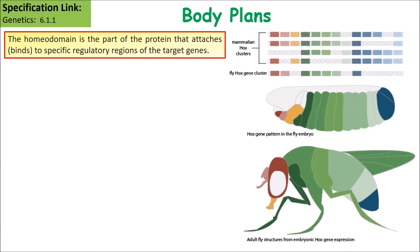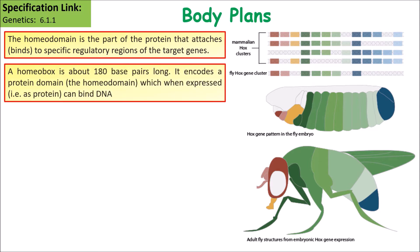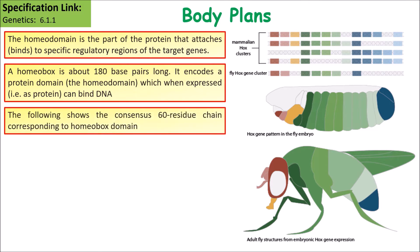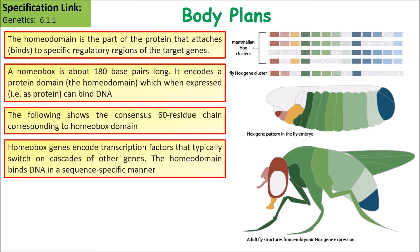The homeodomain is part of the protein that attaches to specific regulatory regions on target genes. A homeobox is about 180 base pairs long and encodes a protein domain. The following shows the consensus 60 residue chain of its corresponding homeobox domain. Homeobox genes encode for transcription factors that typically switch on cascades of other genes.